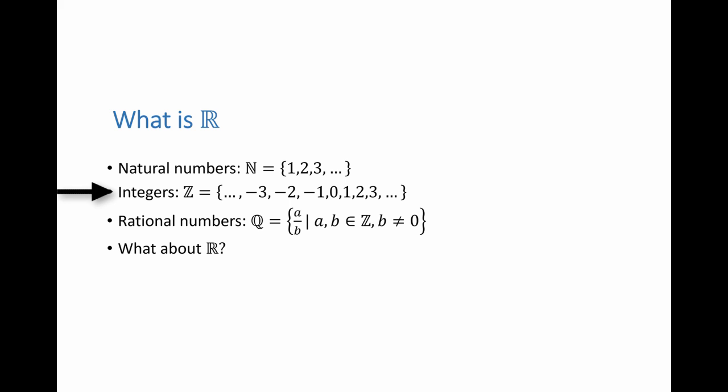We know what the set of integers is, Z is equal to the set of natural numbers, add to them the zero, and add to them the negative of the natural numbers. We also know what the set of rational numbers Q is, it's the set of fractions a over b, where a and b are integers, and of course b cannot be equal to zero. But what about the set of real numbers?